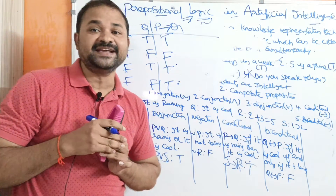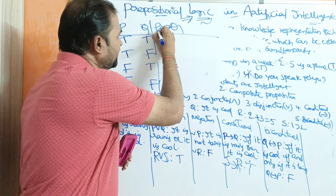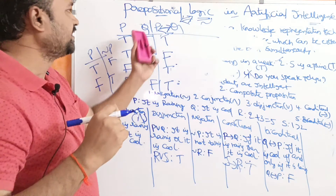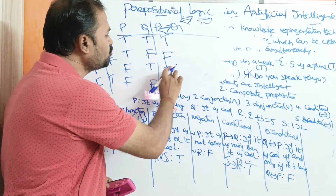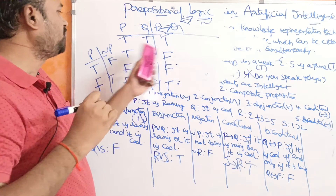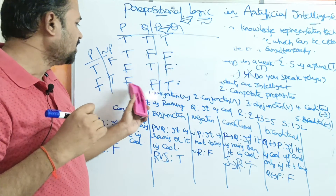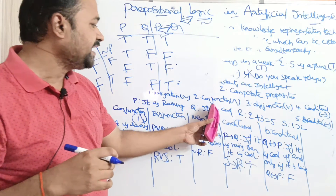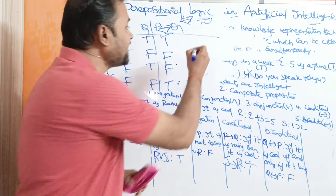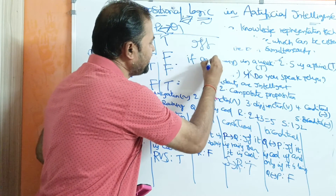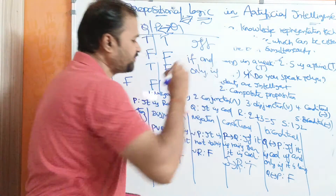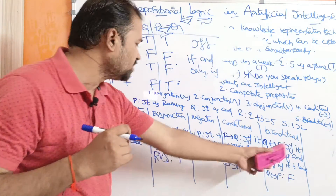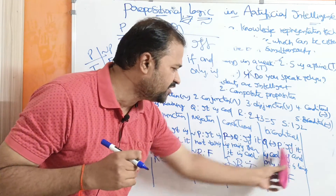Now let us see the last connective: biconditional, represented by the double arrow symbol (↔). The truth table: true ↔ false = false; false ↔ true = false; true ↔ true = true; false ↔ false = true. Biconditional is represented by 'IFF,' meaning 'if and only if.' For example, Q ↔ P means 'It is cool if and only if it is raining.'